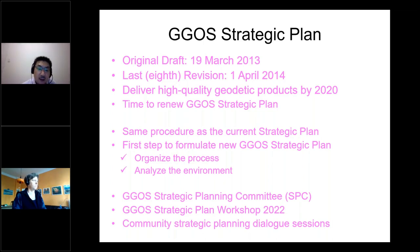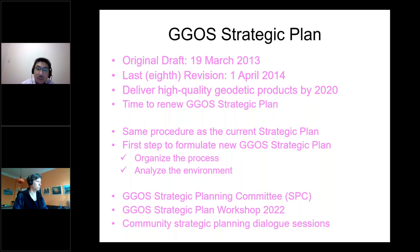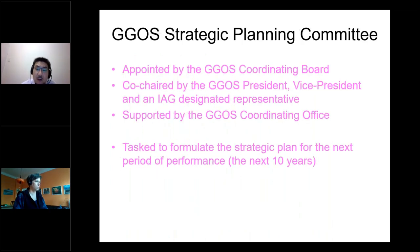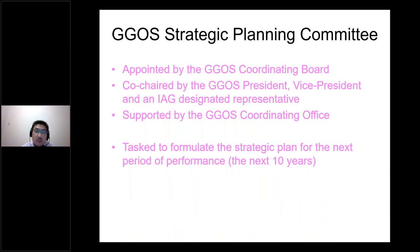The first is to organize the GIGOS Strategic Plan Committee (SPC), the second is a GIGOS strategic plan workshop, and the third is community strategic planning dialogue sessions. The GIGOS Strategic Plan Committee is appointed by the GIGOS Coordinating Board and co-chaired by the GIGOS president, vice president, and an IAG designated representative, and supported by the GIGOS Coordinating Office. The task of the committee is to formulate a strategic plan for the next period of performance.